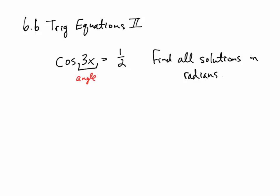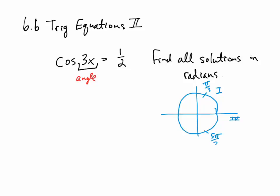To solve this equation, we want to answer: cosine of what angle is equal to 1/2? In other words, where is cosine equal to 1/2? Cosine is positive in quadrant 1 and quadrant 4, and cosine equals 1/2 at pi over 3 and 5 pi over 3.